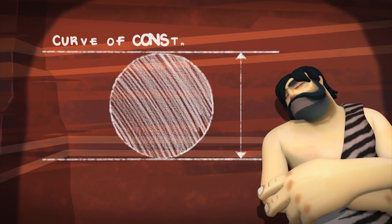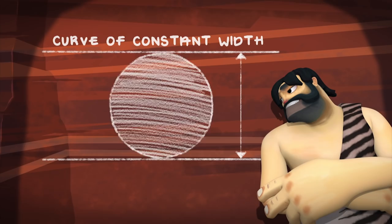This makes the circle, unlike the square, a mathematical shape called a curve of constant width.